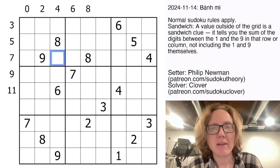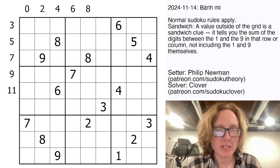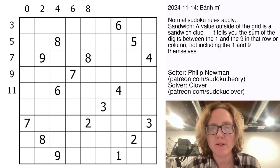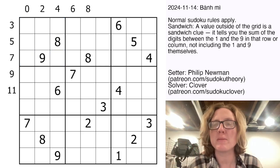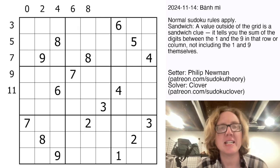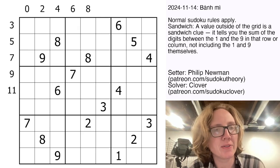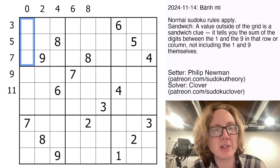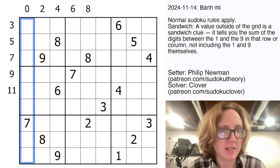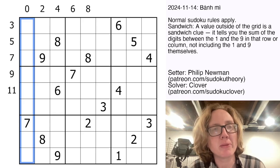And in addition to that, we have some clues outside of the grid, and clues outside of the grid tell you the sum of the digits that are sandwiched between the one and the nine in that row or column.